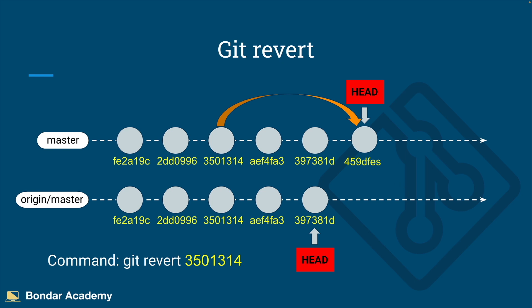There are a few things to know about this approach. When you perform git revert you do not cancel all the changes between the latest commit and the commit you're reverting to — those intermediate commits remain in the branch. Only the changes performed in the specific target commit will be restored as a new commit. Also, if in those intermediate commits you were modifying the same code you want to restore, you will most likely have merge conflicts that you need to resolve.